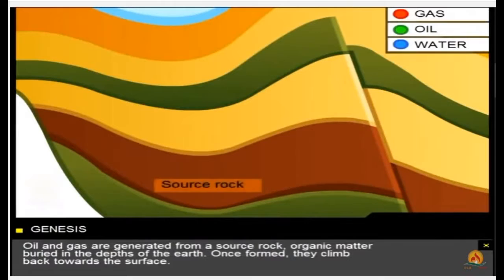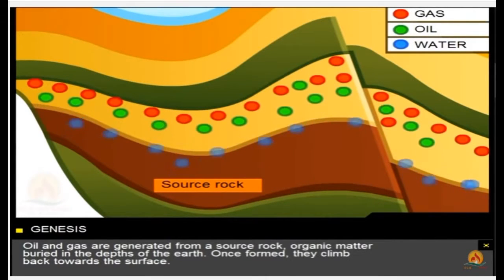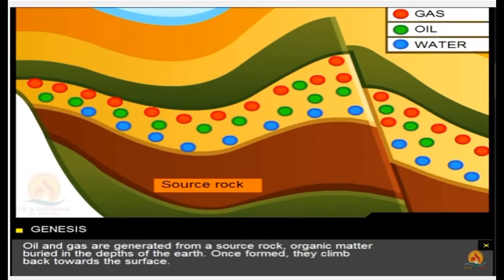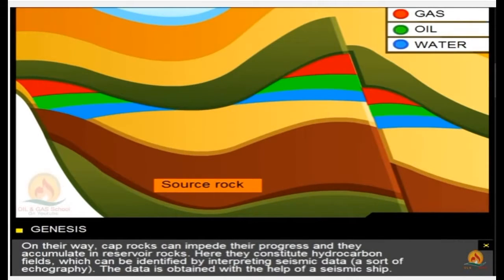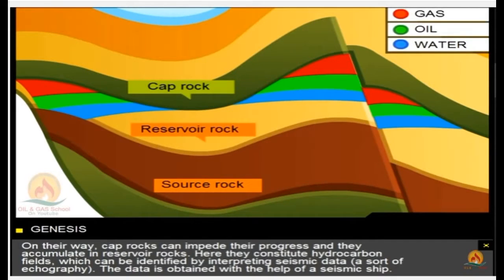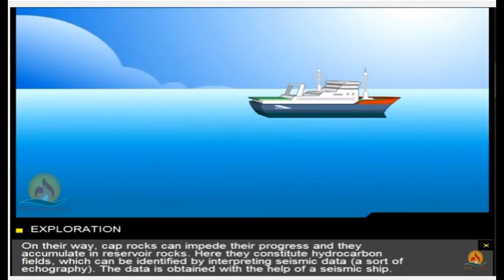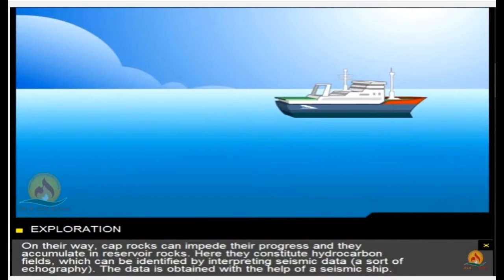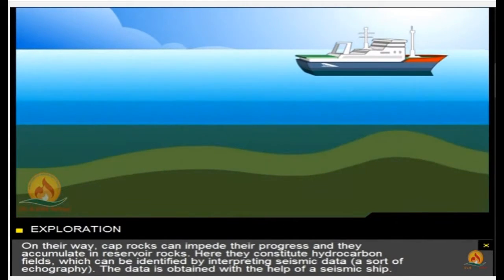Oil and gas are generated from a source rock, organic matter buried in the depths of the earth. Once formed, they climb back towards the surface and accumulate in reservoir rocks. Here they constitute hydrocarbon fields, which can be identified by interpreting seismic data — a sort of echography. The data is obtained with the help of a seismic ship.